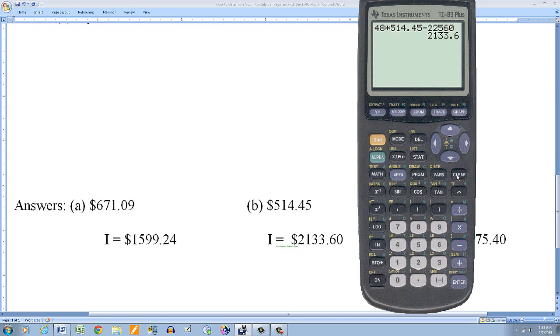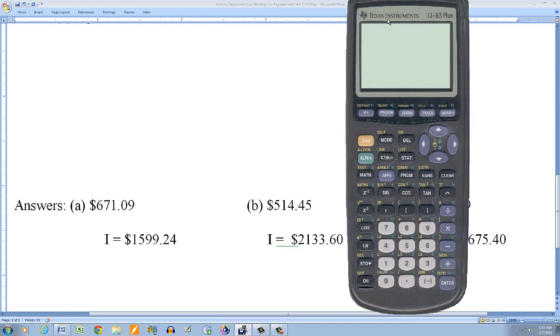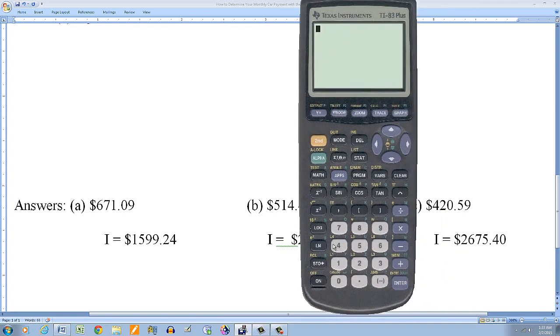Okay. Obviously, if I go for five years, I'll pay even more interest. So this would be then 60, 60 payments times the amount of each payment, 420.59 minus the amount of finance, $22,560. And in this case, the interest is $2,675.40. Okay. So that's something you need to consider.